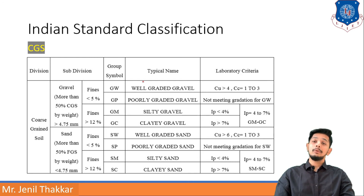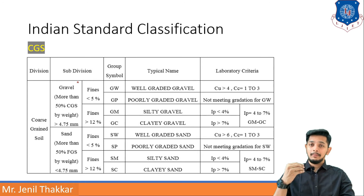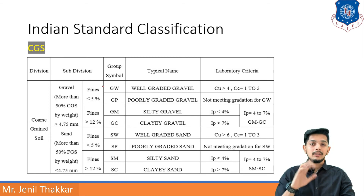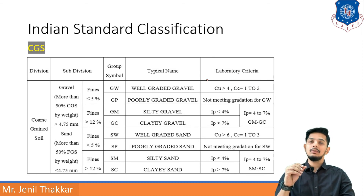GW means well-graded gravel and GP means poorly graded gravel. To distinguish between them, you check the CU and CC values. If CU is greater than 4 and CC is in the range of 1 to 3, then it is GW. If these CU and CC requirements are not met, then it will be GP (poorly graded). If the amount of fines is greater than 12%, you then consider GM or GC.